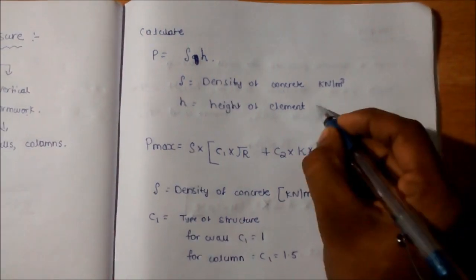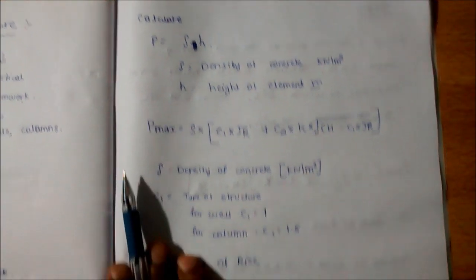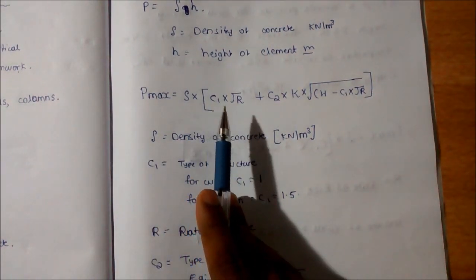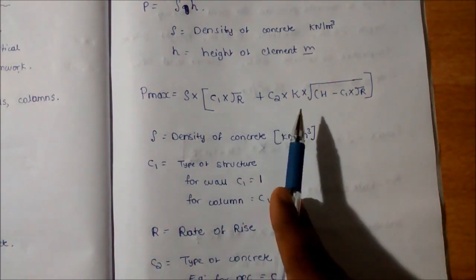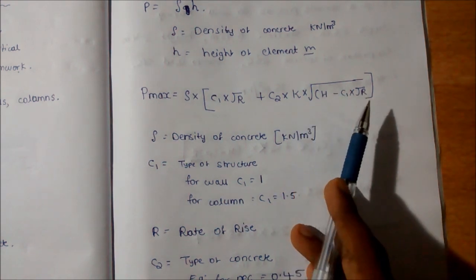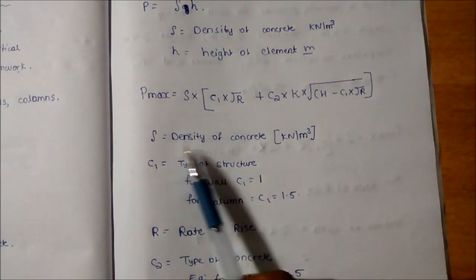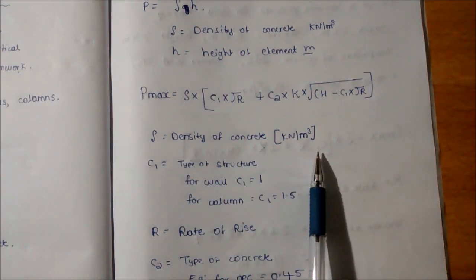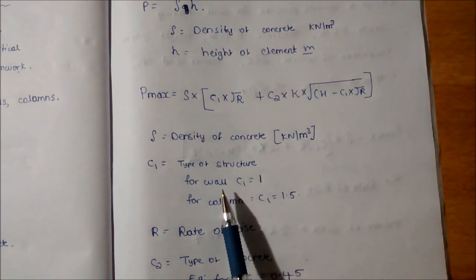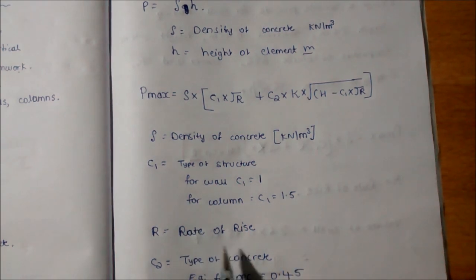To determine P max, we have the formula: rho into C1 times square root of R plus C2 into K into square root of H minus C1 into square root of R. Rho is the density of concrete in kilonewton per meter cube. C1 is the type of structure: for wall it is 1, and for column it is 1.5. R is the rate of rise.